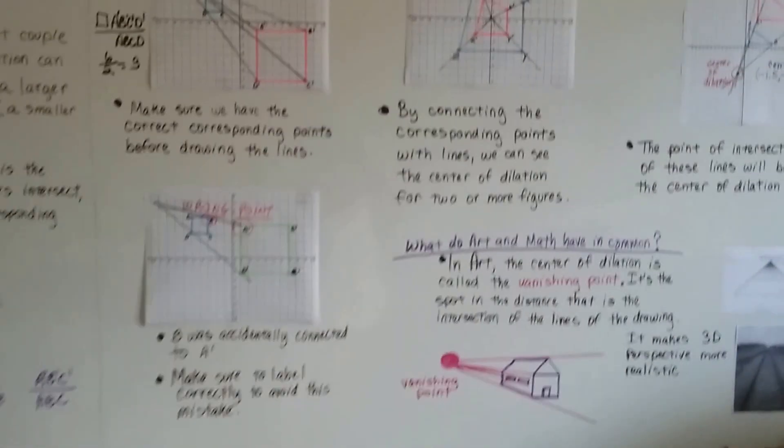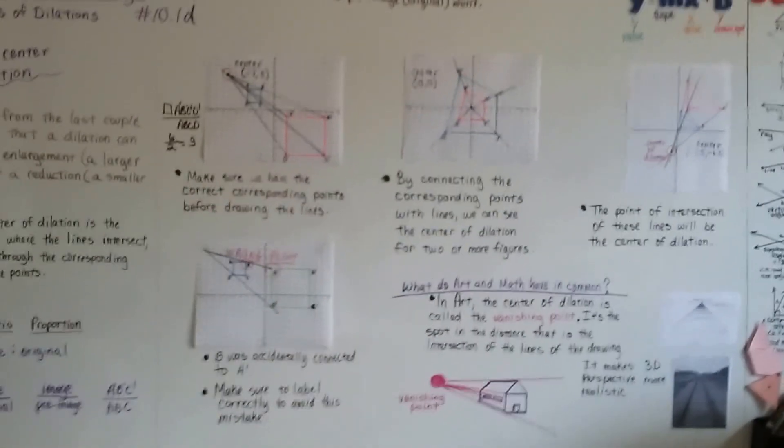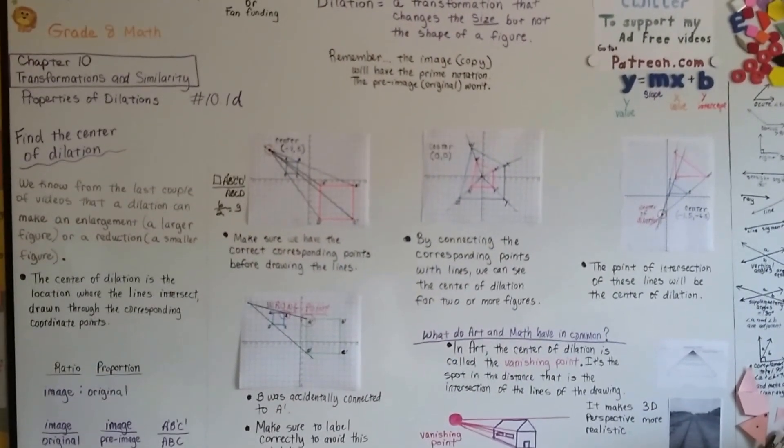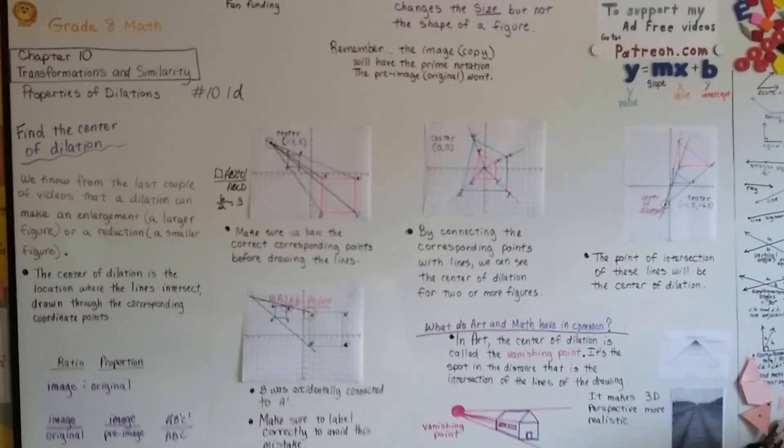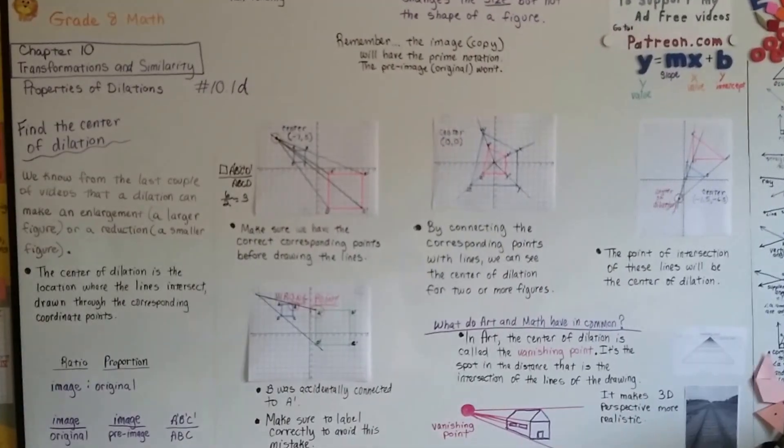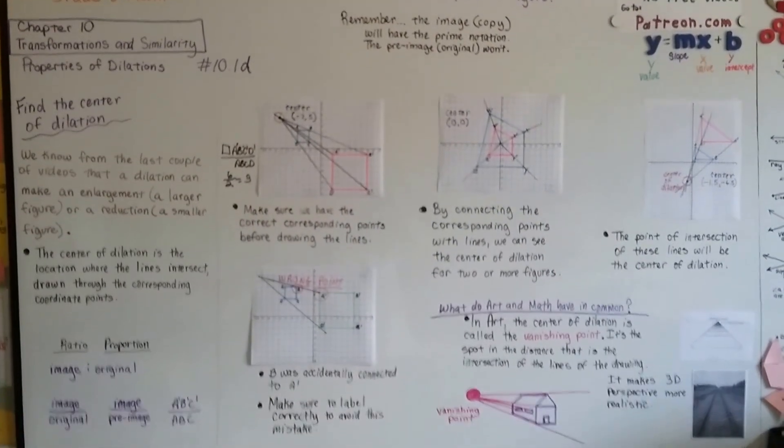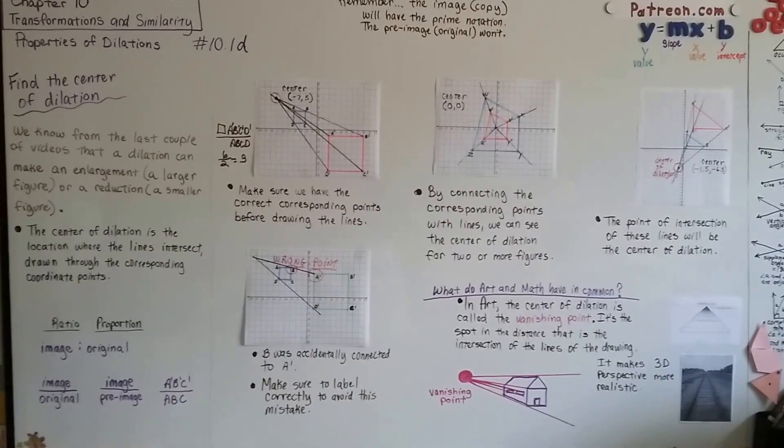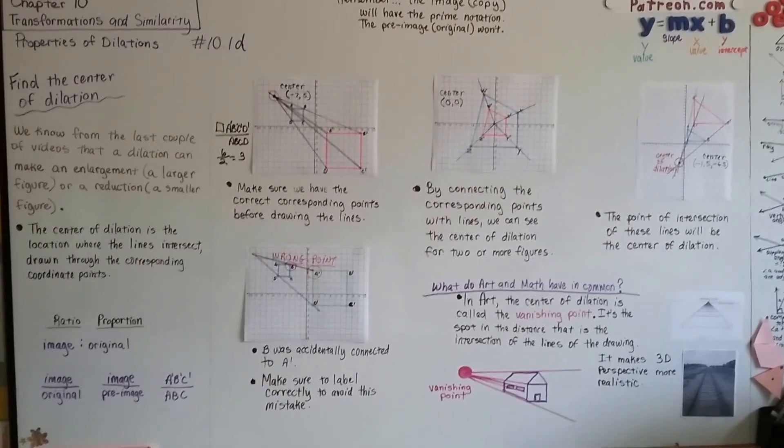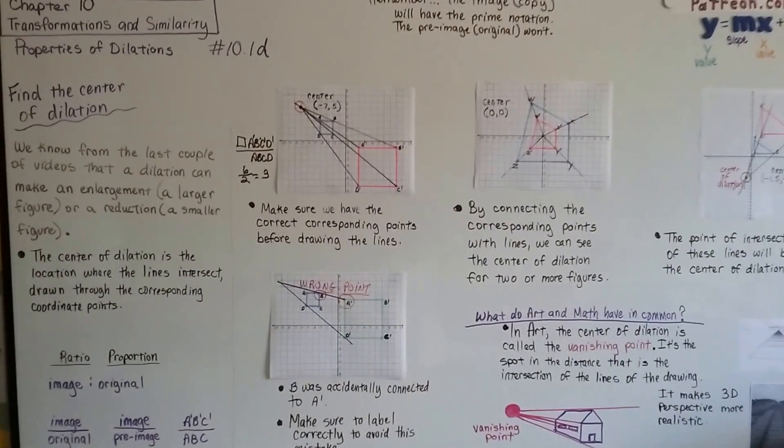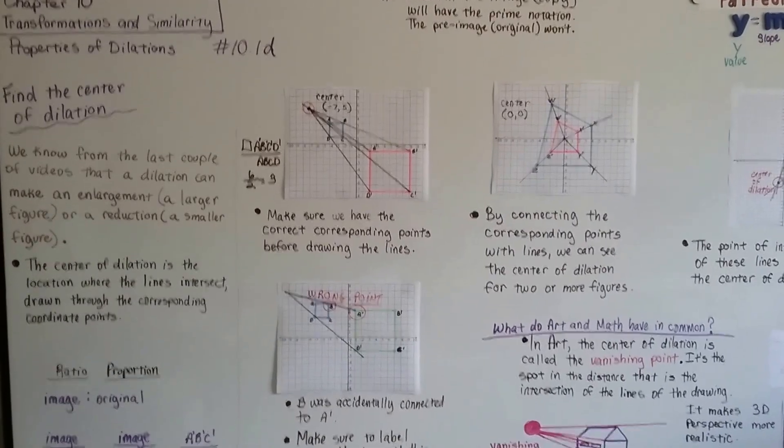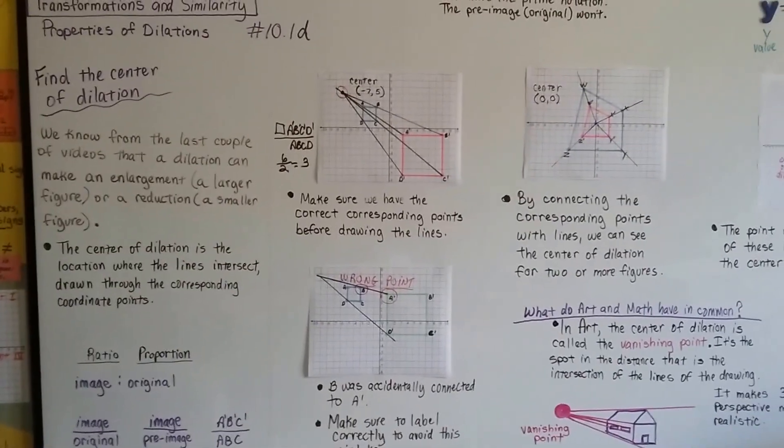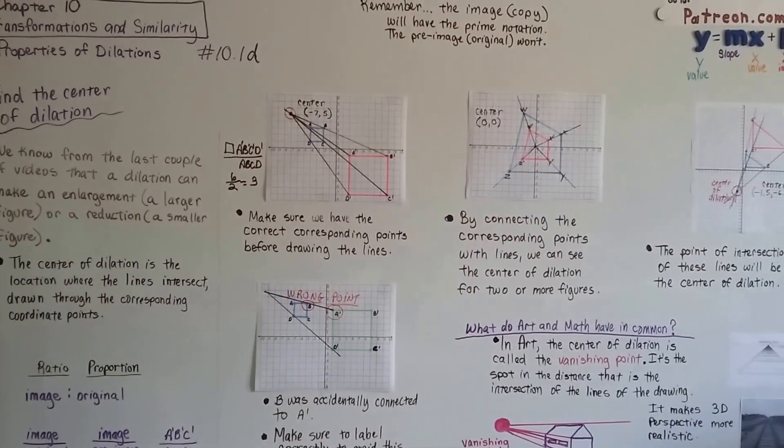Art is very connected to math. Math is everywhere. Even music is mathematic. We're going to continue on to the next unit. I hope now you can find a center of dilation and use a vanishing point to make your 3D perspective look more realistic. We're going to go on to the next video of 10.2a and start doing dilations algebraically. I'll see you there.